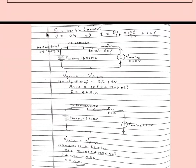Given in the question: Q is equal to 100 ampere-hour, and time for full charge is 10 hours. Using the formula I equals Q divided by T, we get the charging current I equal to 10 ampere.